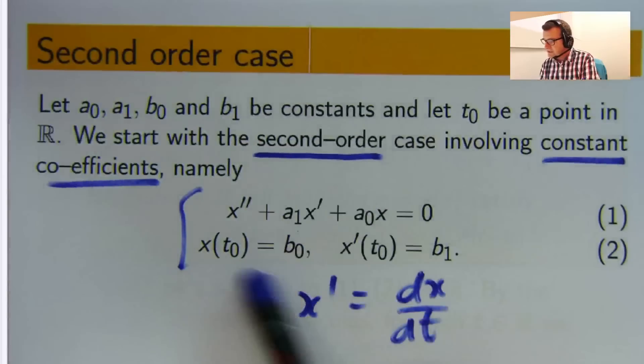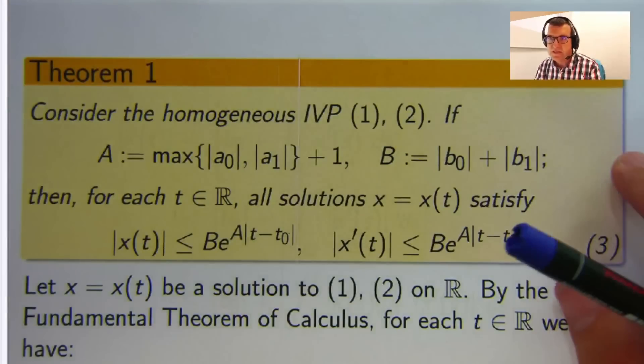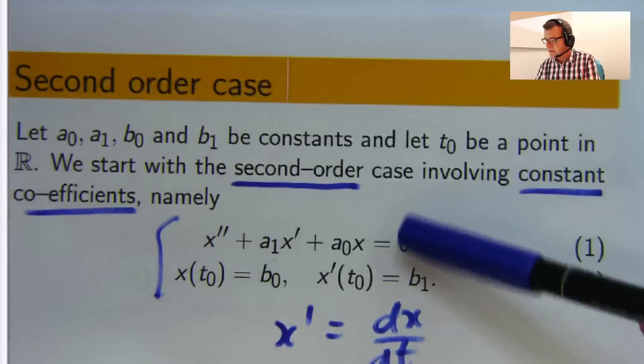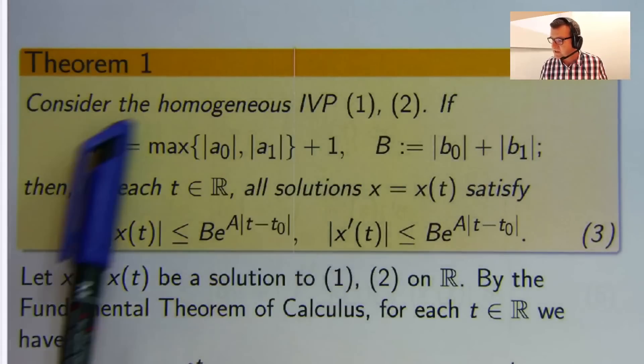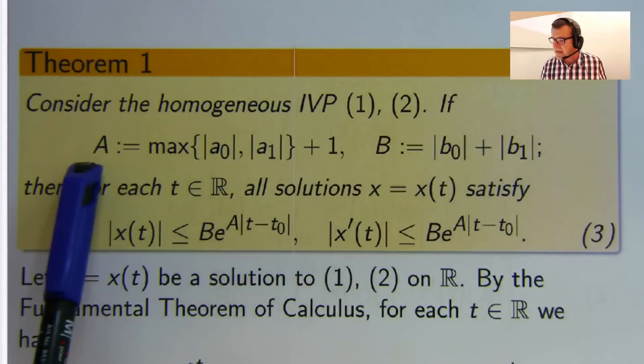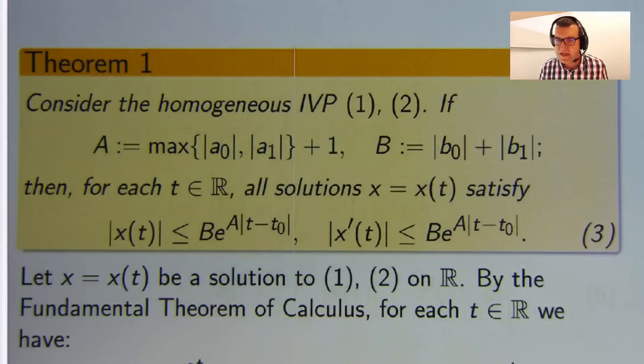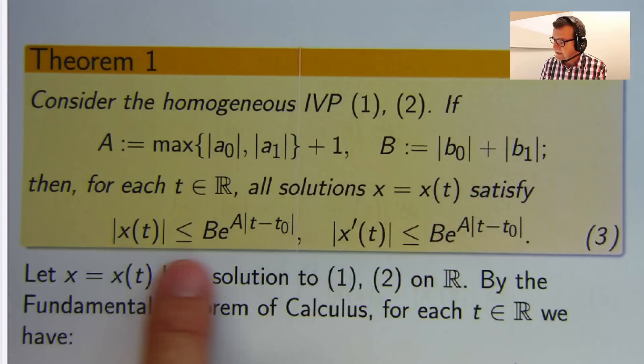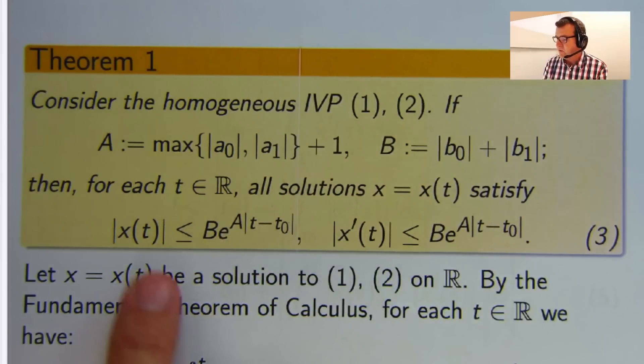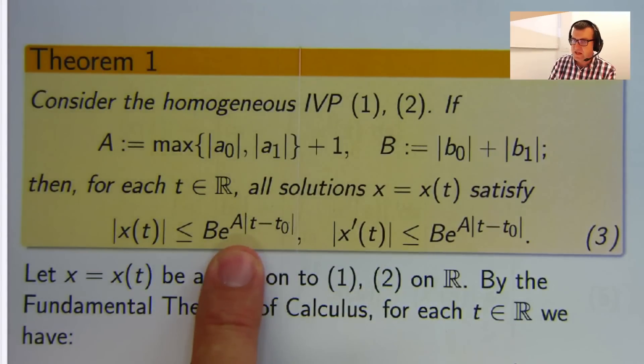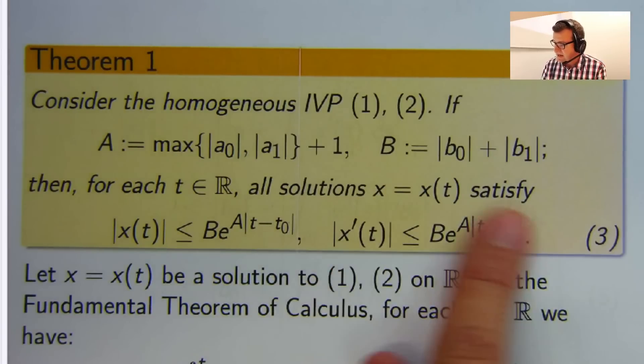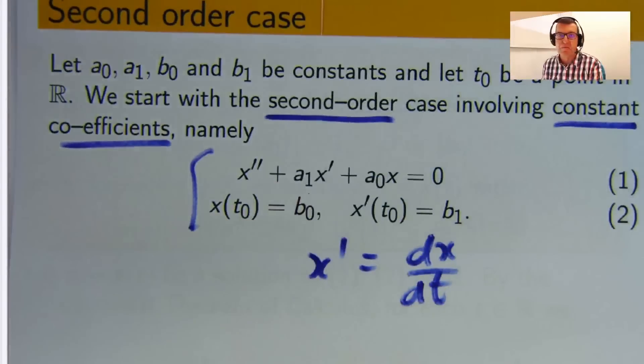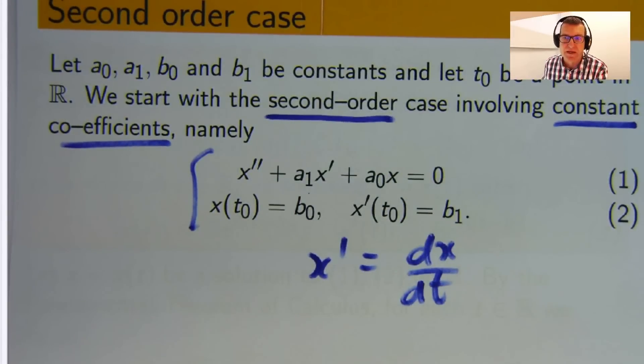So this is our main theorem. This of course is a second order initial value problem. Consider the IVP (1), (2). Define constants big A and big B to be these quantities. Big A is just defined here for convenience. And for all solutions x(t), there are these inequalities, these a priori bounds here, where x is bounded by this exponential function, and the derivative x prime is bounded by the same exponential function. So we can conclude that all solutions to this problem are exponentially bounded in some sense.